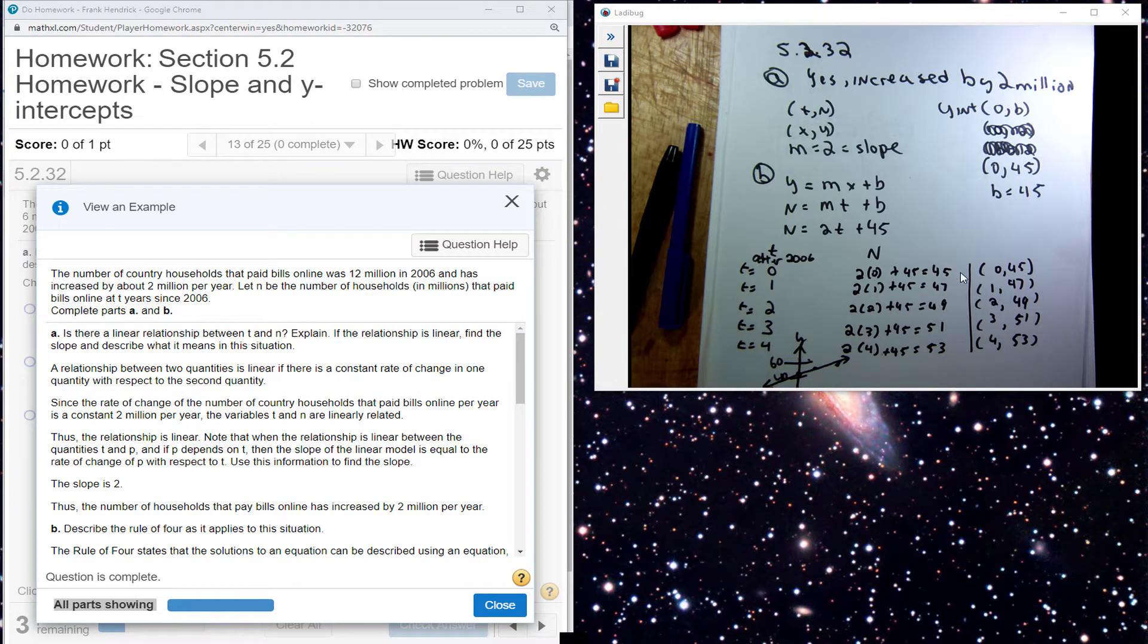In case you have one similar to it, yes, there is a linear relationship. The slope in this case is 2 million.